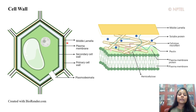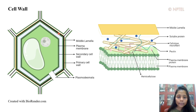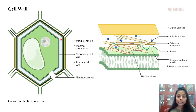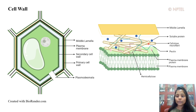Next comes the primary cell wall, which is present at the inner side of the middle lamella. Thus, the middle lamella is present between the primary cell walls of two adjacent plant cells. The primary cell wall is a thin, flexible, and expandable structure and is present in the growing plant cells. It is mainly composed of cellulose microfibrils along with hemicellulose, pectin, and different soluble proteins.